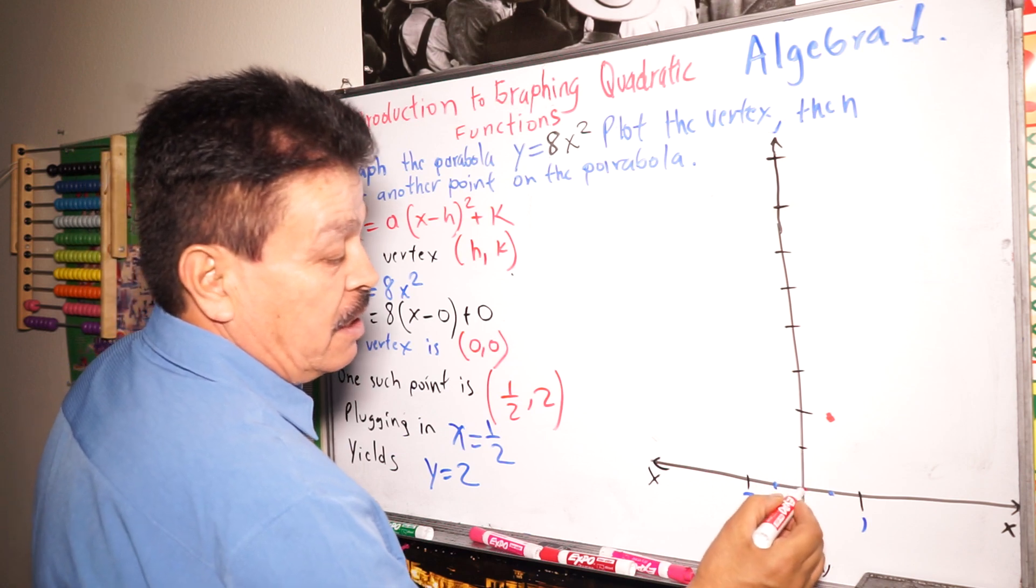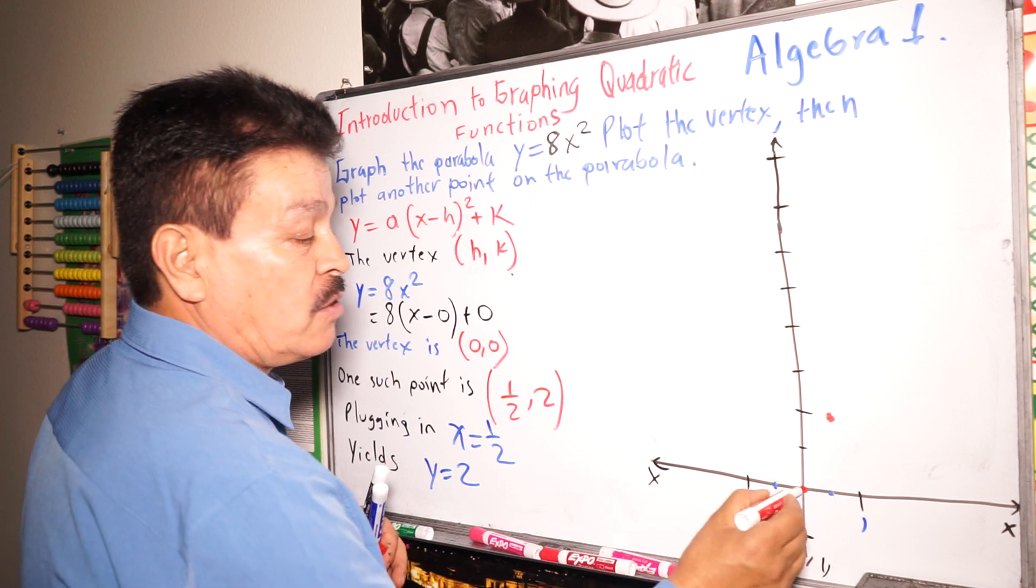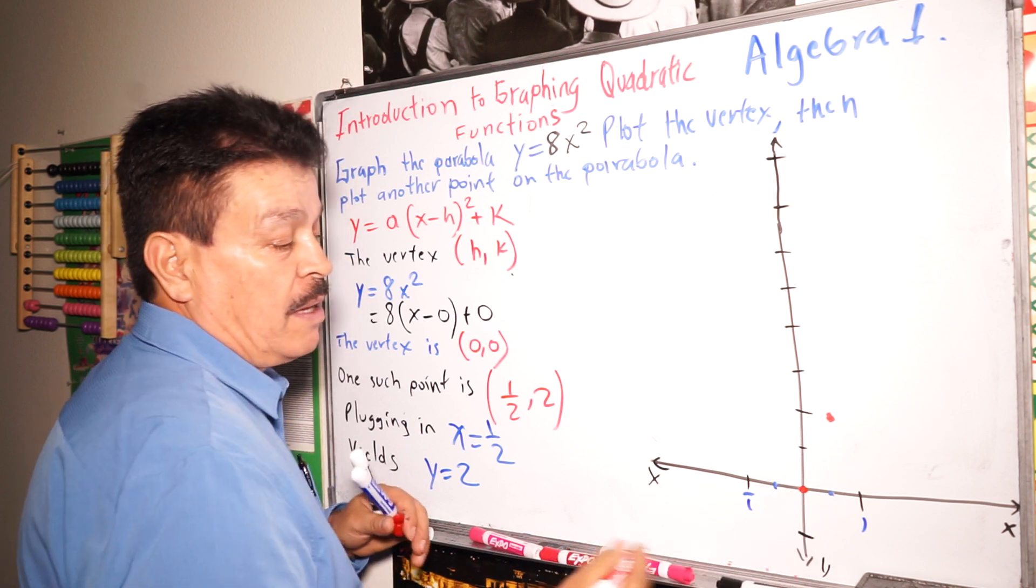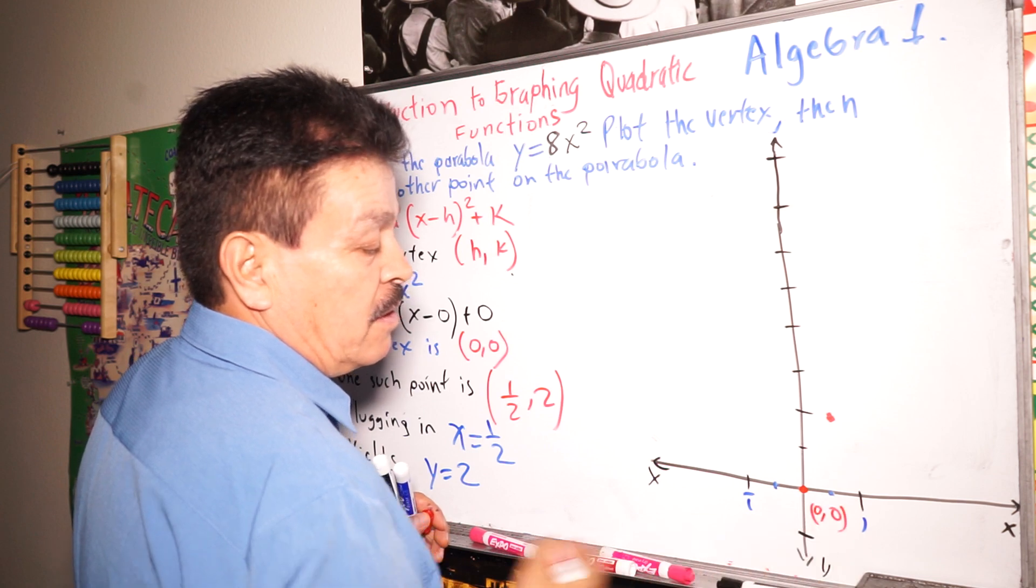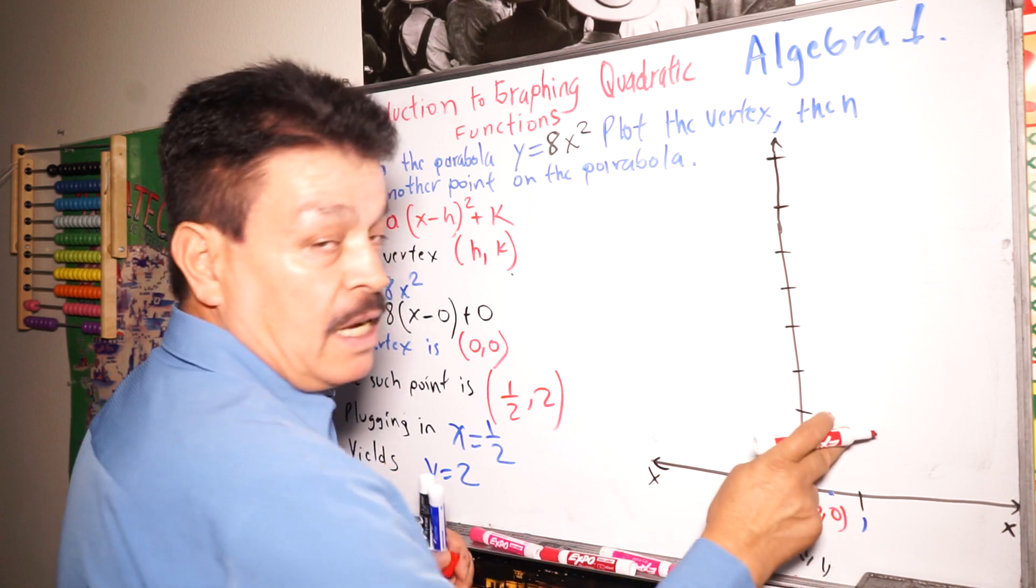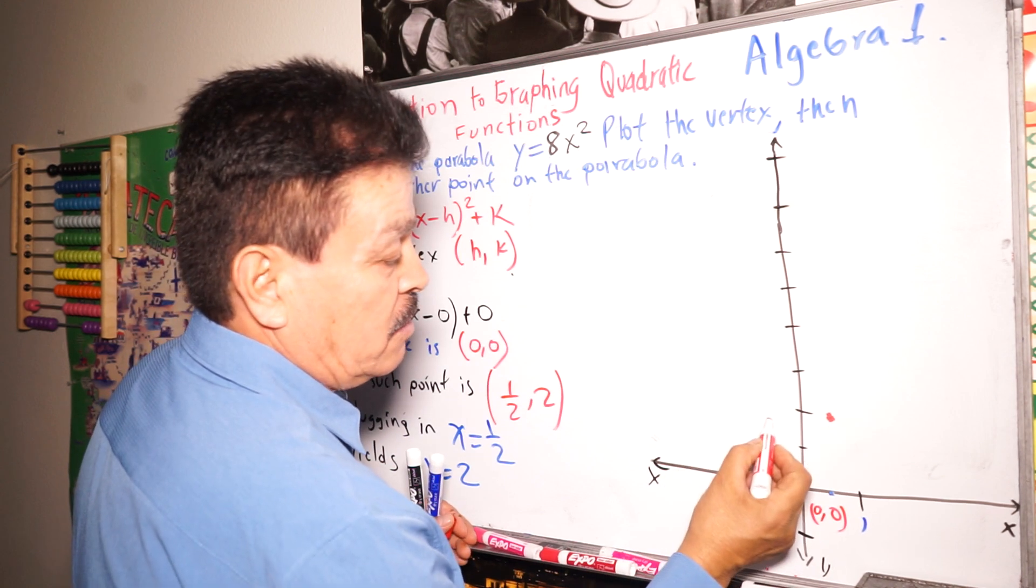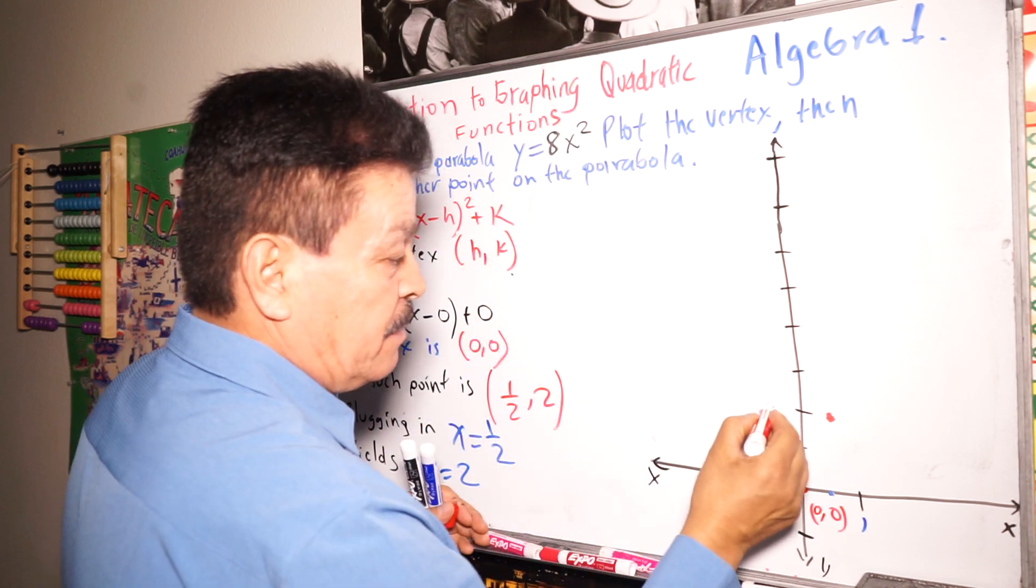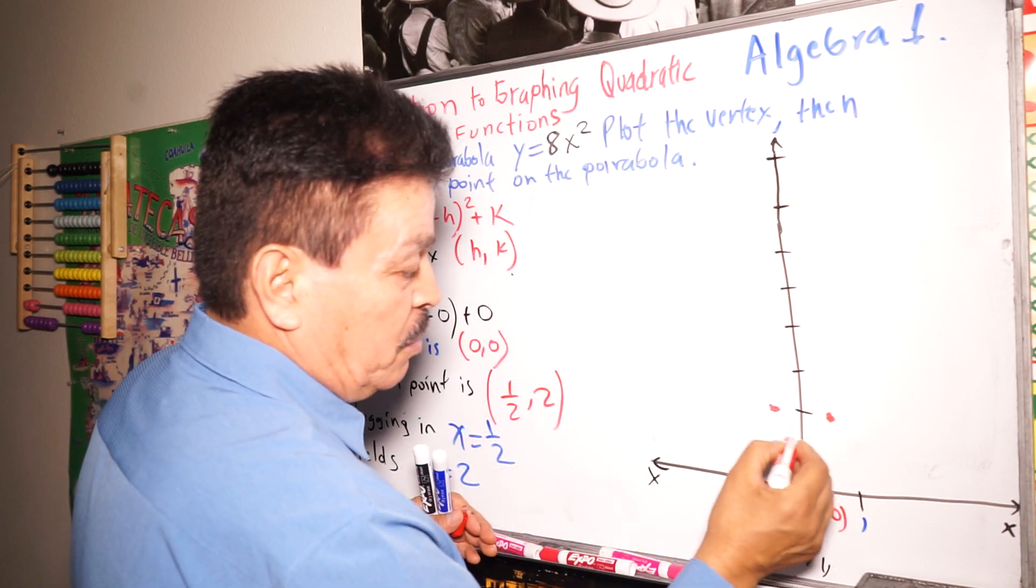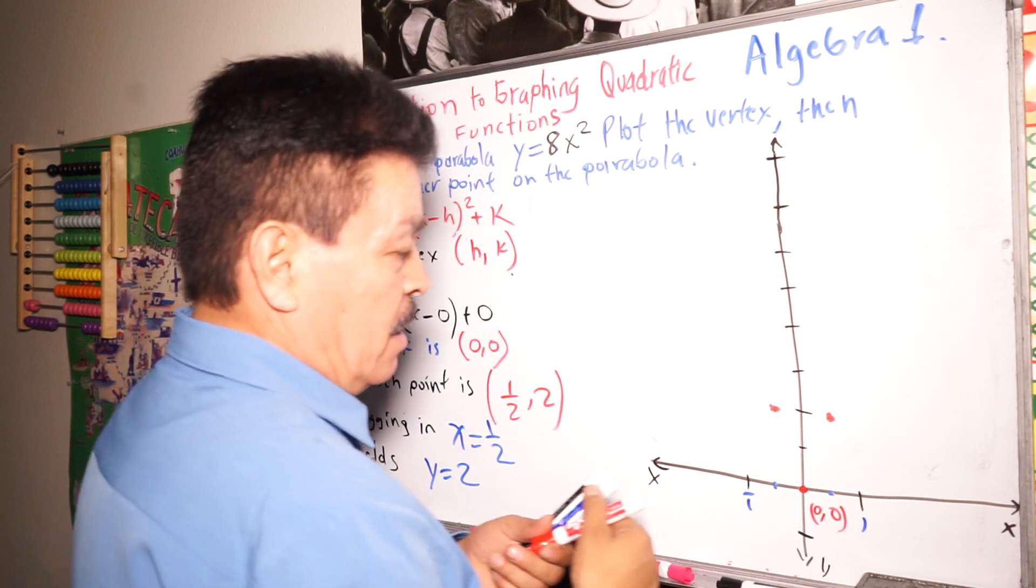This is the origin of the parabola. The origin is zero comma zero right here. And then we have one half here and two. So it's the other side. It's also one half here because it's a parabola. Remember, in this way it should be like this, also like that.